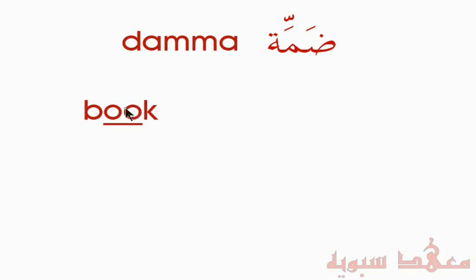We've reached the Dhamma now. What sound does a Dhamma make? It's like the word 'book' — although there are two O's written, it's pronounced like a Dhamma. Unlike the word 'choose,' where there's an elongation, the Dhamma is a short sound. In Arabic, the way something is written is the way it's pronounced — there's no ambiguity like in English.